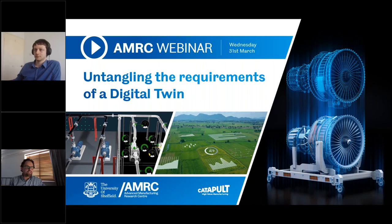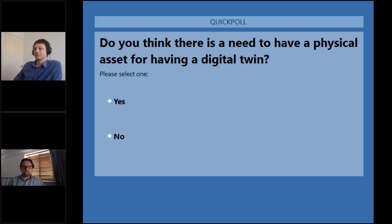From the initial poll, we could see that you are very interested in the requirements and adoption. But just before we go further, we want to ask one more very quick poll just to set the context for the rest of the discussions. Do you think that there is a need to actually have a physical asset for having a Digital Twin? This is something a lot of people are not quite sure about — whether it's a requirement or not — and more importantly, to understand the difference between a Digital Twin and what is not a Digital Twin.